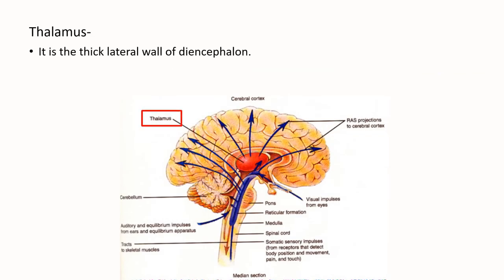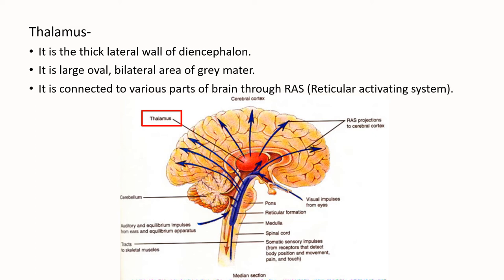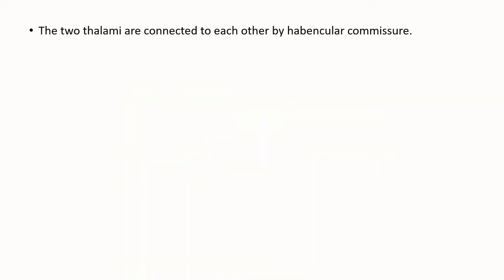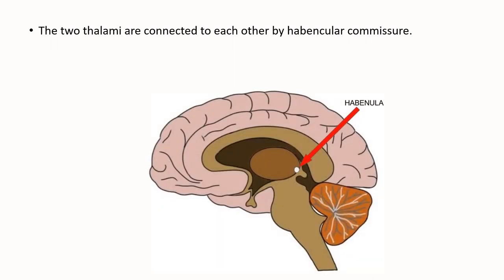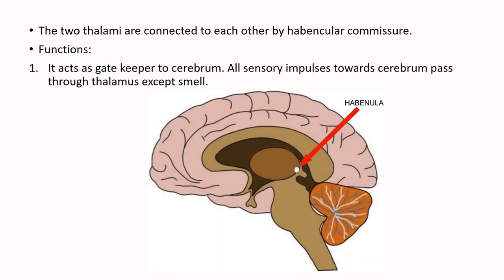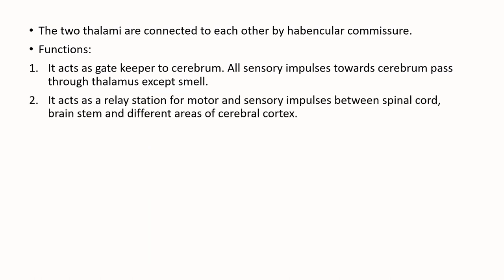The next part is the thalamus. Thalamus is the thick lateral wall of diencephalon. It is a large, oval, bilateral area of gray matter. Thalamus is connected to various parts of the brain through the reticular activating system. The two thalami are connected to each other by habenular commissure. Thalamus acts as a gatekeeper to the cerebrum. All sensory impulses towards the cerebrum pass through the thalamus, except smell. It acts as a relay station for motor and sensory impulses between the spinal cord, brain stem, and different areas of the cerebral cortex.